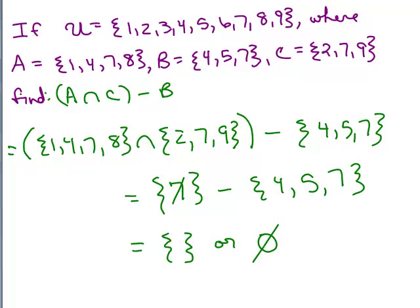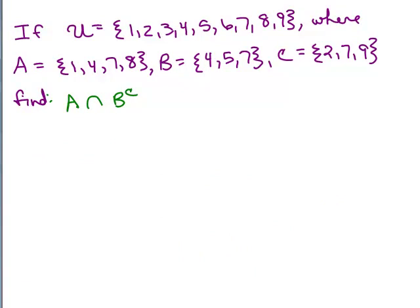Let's go to the second one. Same universal set, same sets A, B, and C. So we want to do A intersect B complement. So what's A? I'm just going to write it down here. Sometimes it's easier instead of your eyes going up to the top.